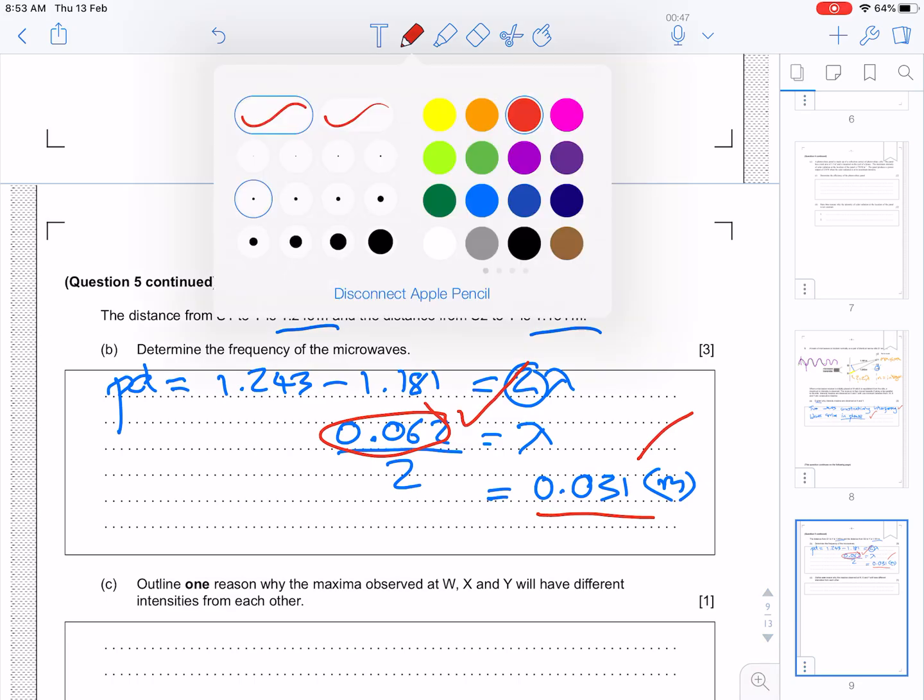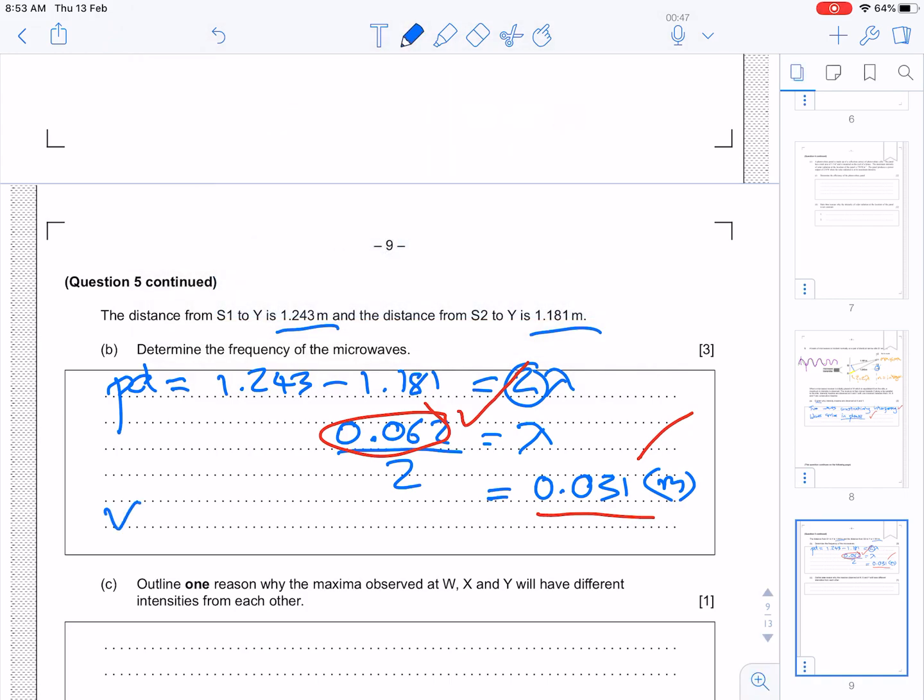Now, we want to find the frequency, so here we're going to use the wave equation, and we're going to say that V equals F lambda. In fact, because these are microwaves, we can call it C, which is the speed of light, and lambda is here.